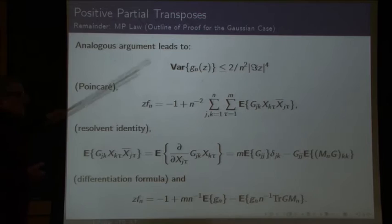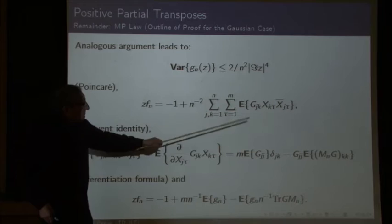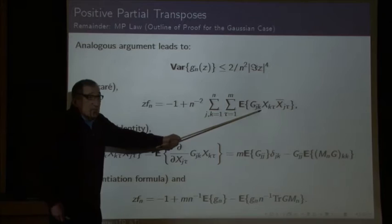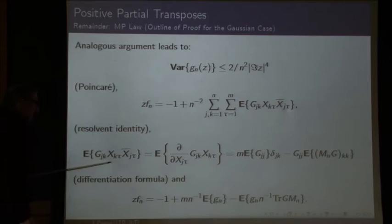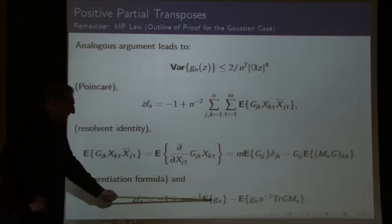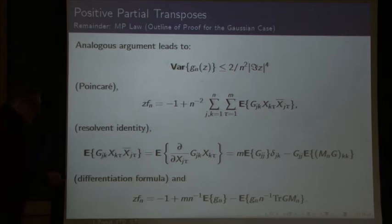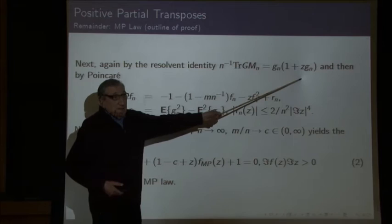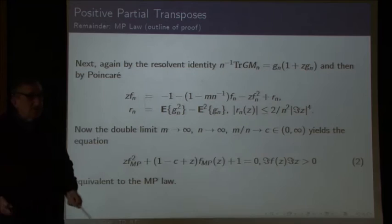The same argument with a small difference applies to prove the Marchenko-Pastur law. One again starts from Poincaré, gets a similar variance bound, then writes the resolvent identity. Now there are two Gaussians, so one applies integration by parts with respect to one of them. After computing the derivative of the resolvent and plugging back, one uses the resolvent identity again to express everything in terms of G, decouples using Poincaré, and the resulting quadratic equation gives the MP distribution.